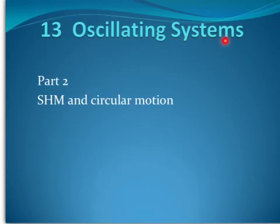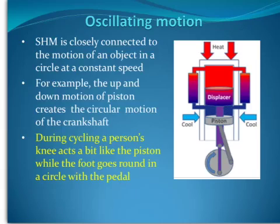Oscillating systems part 2: Simple harmonic motion and circular motion. Simple harmonic motion is closely connected to the motion of an object in a circle at a constant speed. The example here is a piston inside a cylinder. For example, the up and down motion of the piston creates the circular motion of the crankshaft.